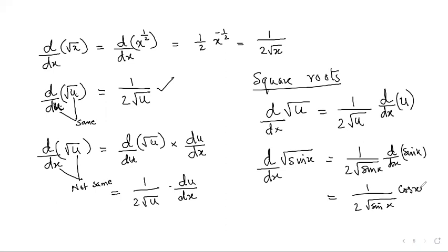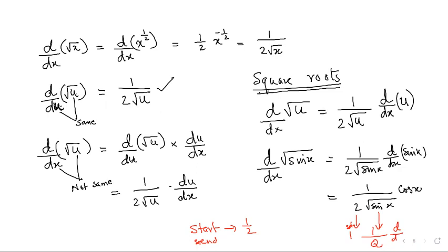Root rule summary: start with 1/2 — that's the first term. Second term: 1 over the question (inside the root). Third term: d/dx of the base. This root rule applies only for square roots. For 1/(x²+1), first express it as a power — (x²+1)^(−1) — then apply the power rule.